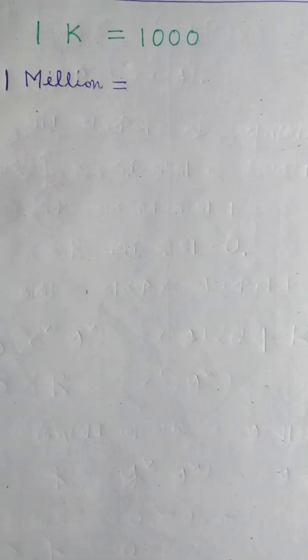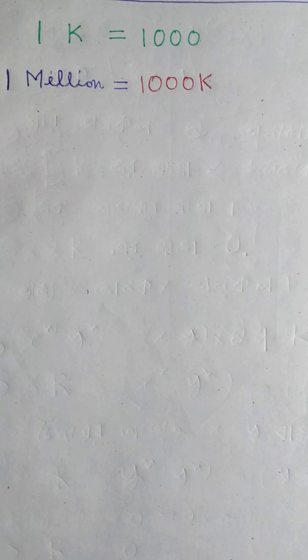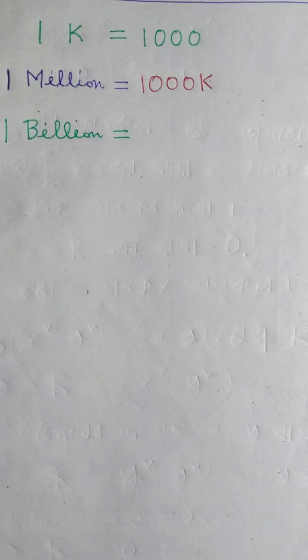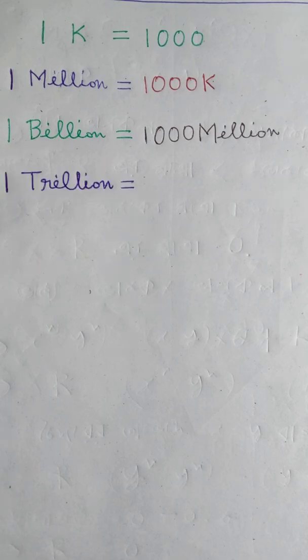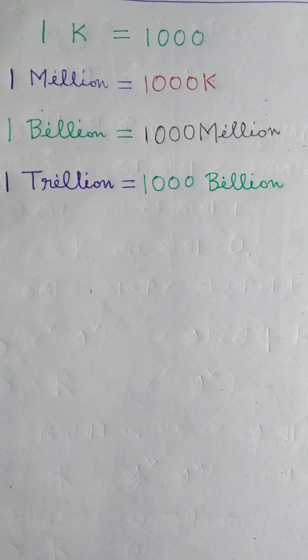One K is equal to 1000. One Million is equal to 1000 K. One Billion is equal to One Thousand Million. One Trillion is equal to One Thousand Billion.